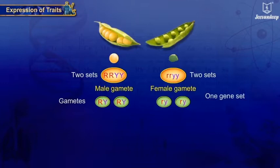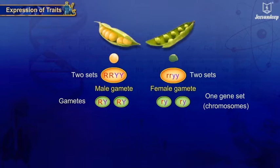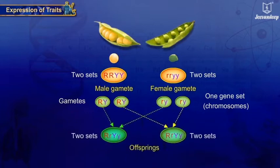Each gene set is present as individual pieces called chromosomes, one each from the male and female parents. Each gamete takes one chromosome from each pair, and when two such gametes combine, they form the normal number of chromosomes. This is the mechanism of inheritance and it also explains the results of Mendel's experiments.